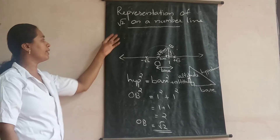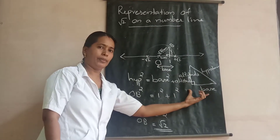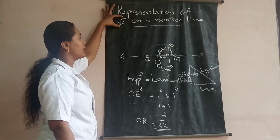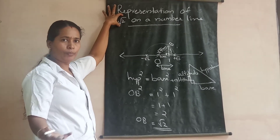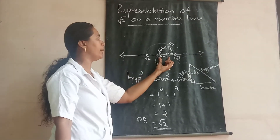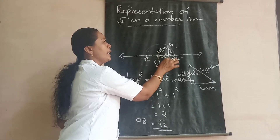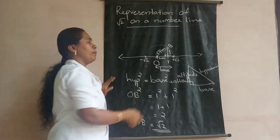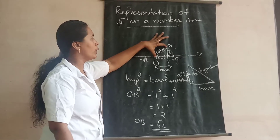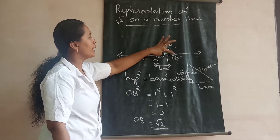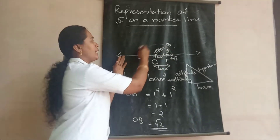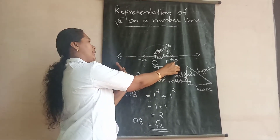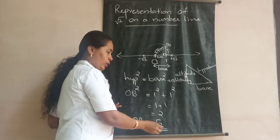So on the right side we get positive root 2 and on the left side we get negative root 2. What did we do? We applied Pythagoras theorem to get the length root 2. Since we don't know the decimal value of root 2, we took base as 1 cm and altitude as 1 cm. Using Pythagoras theorem, length OB becomes root 2. Then we took this root 2 in the compass with O as center and OB as radius, and completed the arc.